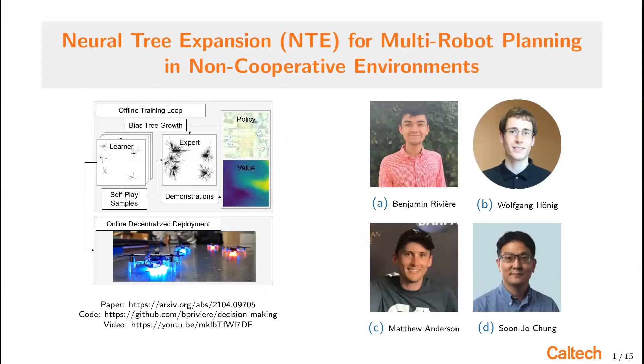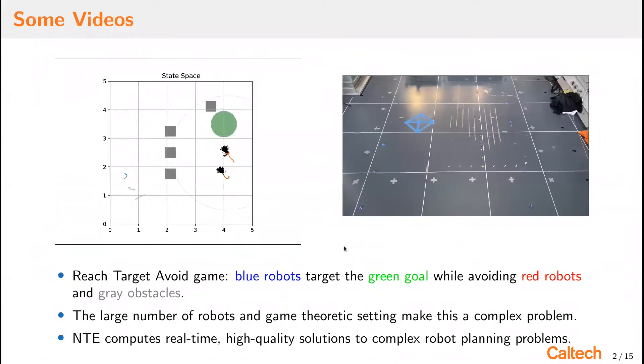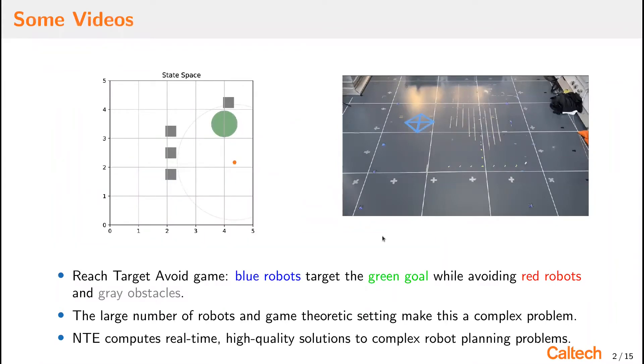The goal of the research is to develop a high-performing real-time planner for complex robotic systems. To motivate the rest of our talk, we'll first present some videos of the planner in action. Although the planner is compatible with general problem statements, we'll first focus on the reach target avoid game, shown here in the movie on the left.